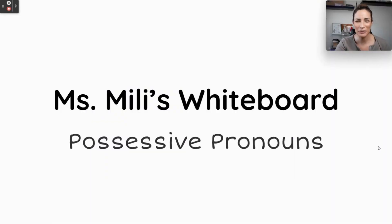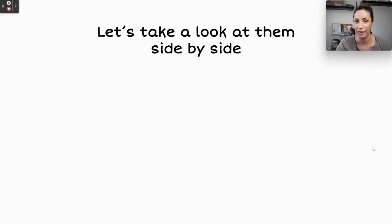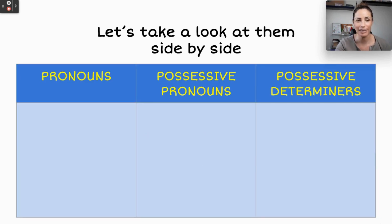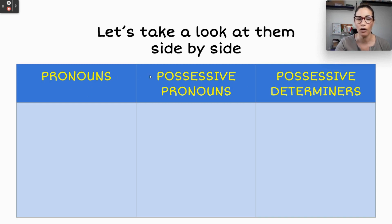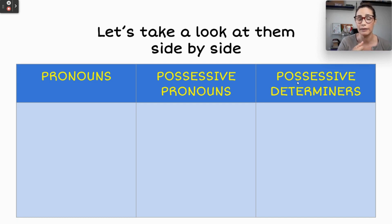Hi guys, welcome to class. Today we're going to be taking a look at possessive pronouns. I've made a chart here — you can see that I've put pronouns, possessive pronouns, which is what we're going to mainly be looking at, and then possessive determiners. I've put this chart because I want you to see all of these side by side, one right next to the other, so you can see how they are similar and how they are different, because sometimes we can get them confused, especially with possessive pronouns and possessive determiners when we're learning English. So we're going to take a look at this chart.